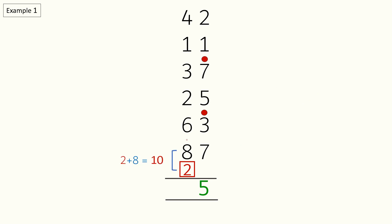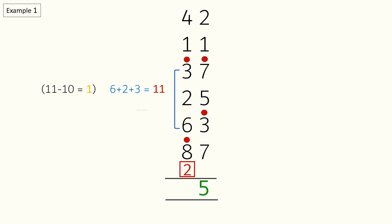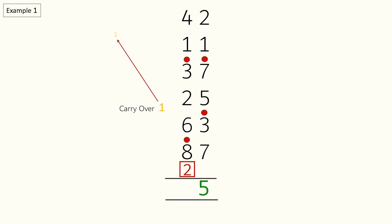We will continue adding in the tens section starting from the bottom. 2 plus 8 is equal to 10, so we will put a dot above 8 for the 10. Let's keep adding: 6 plus 2 plus 3 is equal to 11, so we will put a dot above 3 and carry over 1 from 11.